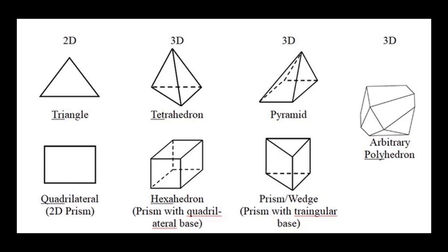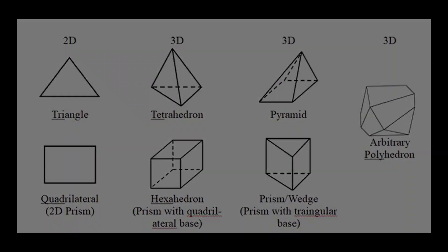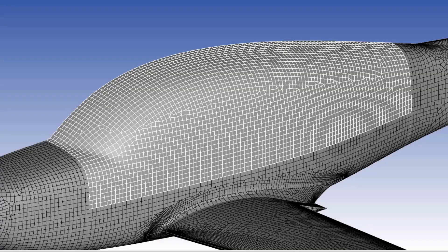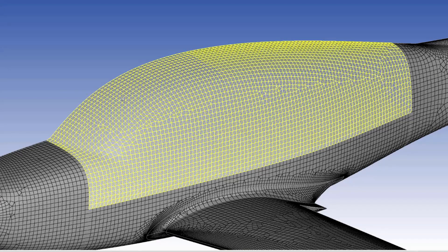For surface, or 2D, meshes typically use triangular or quadrilateral cells. The surface mesh I created consisted of quads that were then diagonalized into tris.